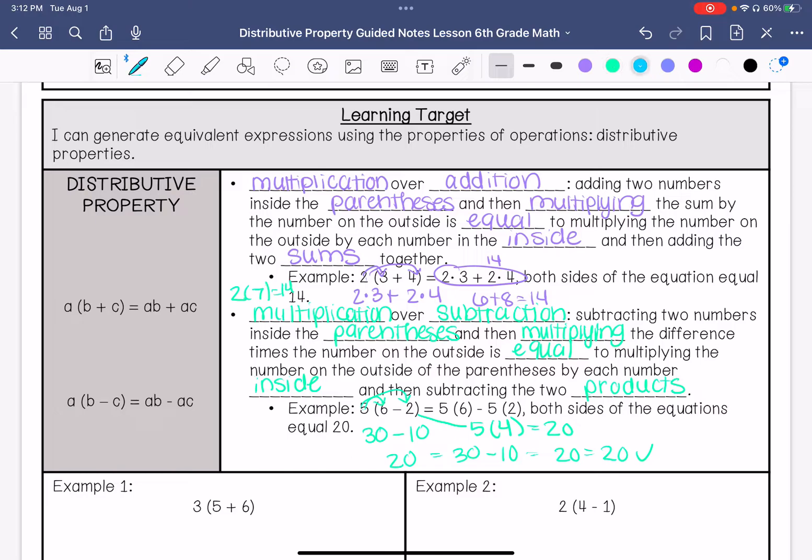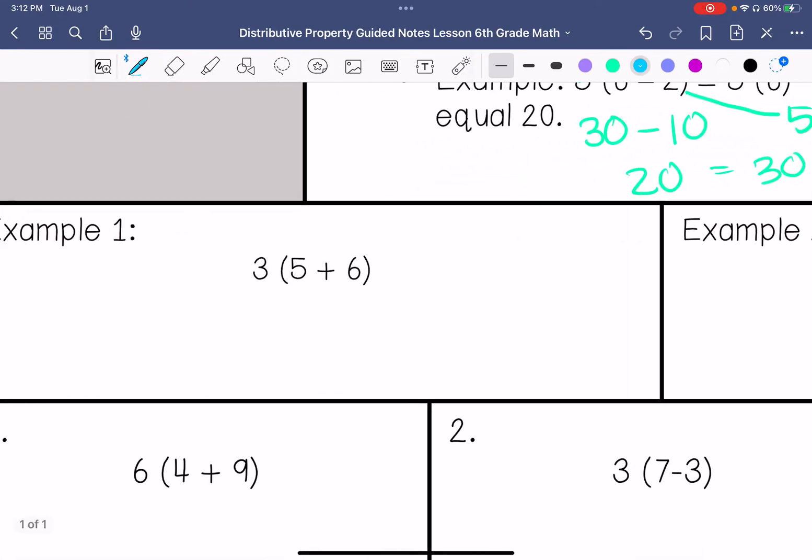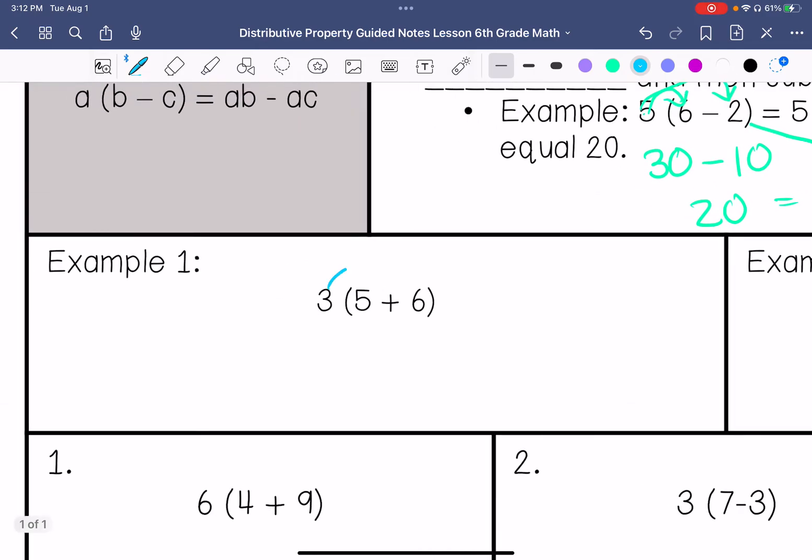All right, let's do some examples. Example number 1. 3 times 5 is 15, 3 times 6 is 18. I add these together.